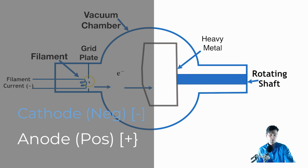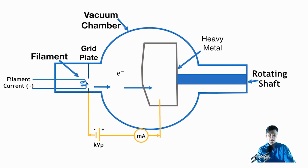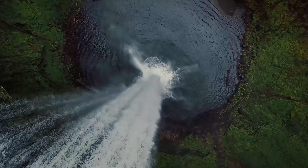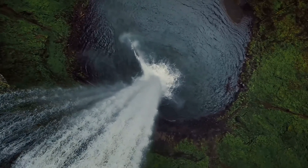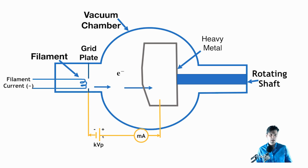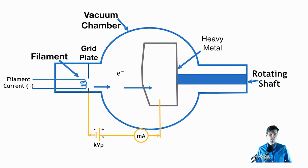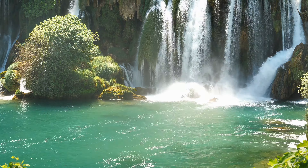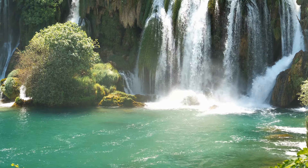This is also called the cathode, where the electrons come out. The electrons are negative and they want to flow towards a positive. That potential across there is called the KVP. The KVP is just like a potential in a battery — or using a waterfall analogy, the height of the waterfall is the potential that water has at the top of the waterfall. Similarly, KVP is the potential difference between the cathode and the anode. The mA, or milliampere, has to do with how many electrons are passing through — it's the measure of the current.